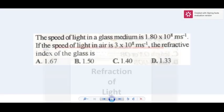Refraction of light: the speed of light in a glass medium is 1.8 times 10 to the 8 meters per second, and the speed of light in air is 3 times 10 to the 8 meters per second. The refractive index of the glass is...